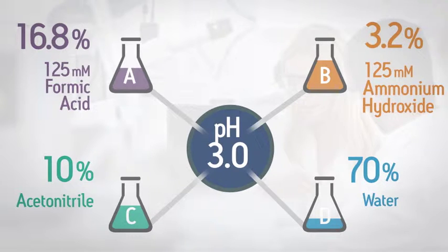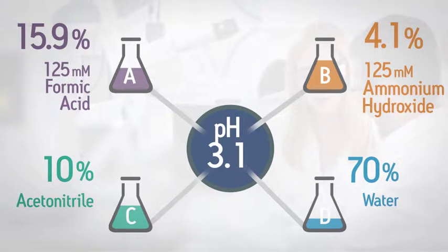Auto Blend Plus takes the desired pH and organic modifier inputs from the method and calculates the proportions of the stock solutions required to make the buffer. Then it automatically blends the buffer for you online. There is no need to enter percentages.